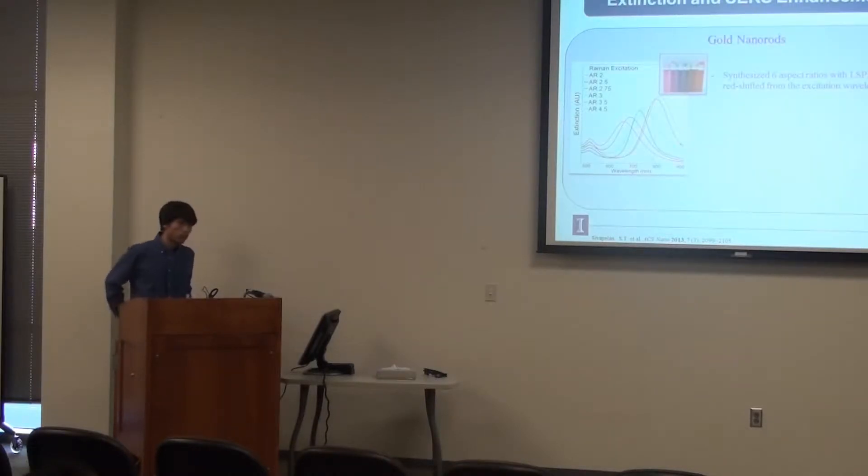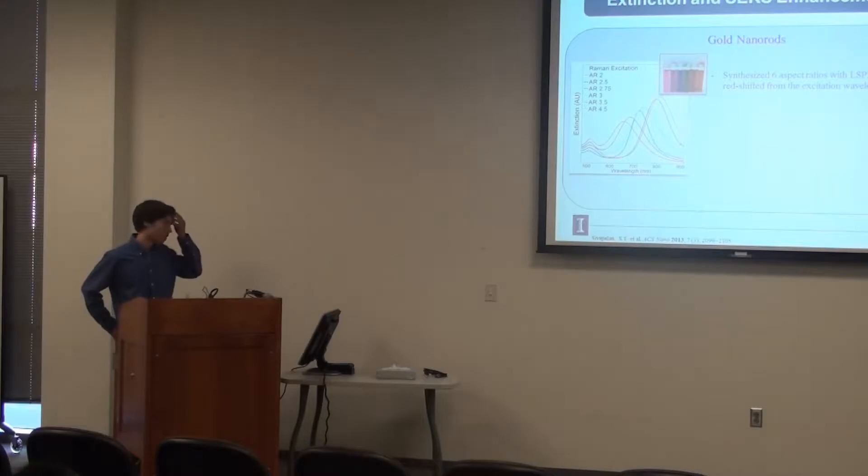So to further study this, what we did is we made a library of six different aspect ratios of gold nanorods. And we wanted to have them blue and red shifted from the excitation wavelength of 785 nanometers. So what we did to perform our Raman measurements is that we wrapped them in some sort of polyelectrolyte. And then we attached electrostatically our molecule, which in this case is methylene blue.